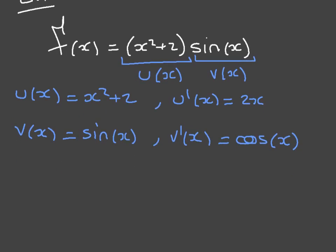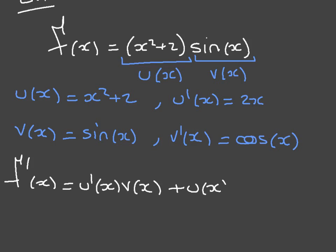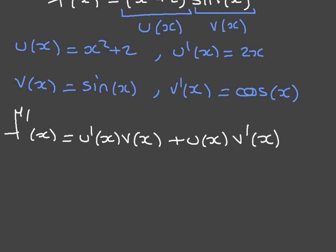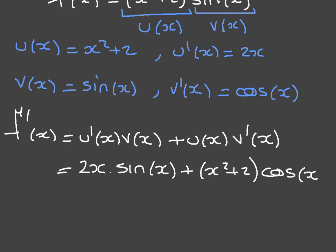Now we can use the product rule and state that f'(x) = u'(x) · v(x) + u(x) · v'(x). Replacing each function by the expressions we have, we find that f'(x) = 2x · sin(x) + (x² + 2) · cos(x). And that would be our final answer.